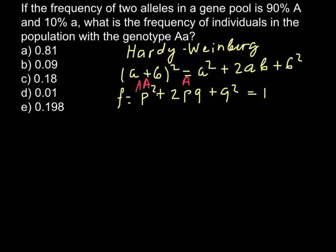P is capital A, Q is small a, so heterozygous. And here would be homozygous recessive, which is going to be small a small a. Also, 1 equals 100%.